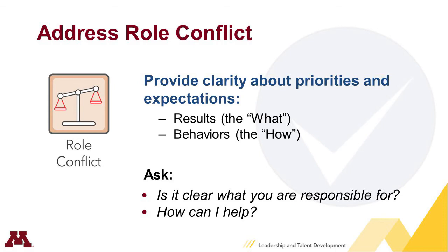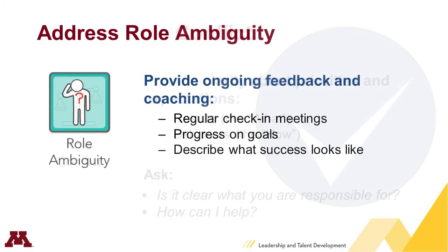You can help turn role conflict into role clarity by clarifying what the priorities are, especially if a direct report is working on multiple projects. Make sure everyone on the team knows what is expected of them and each other — what the results are, how they're expected to work, and what behaviors are expected. Feel free to ask them, 'Is it clear what you're responsible for?' or 'How can I help you?' For role ambiguity, you can help by providing ongoing feedback and coaching, meeting with direct reports one-on-one regularly to discuss workload, goals, and progress.